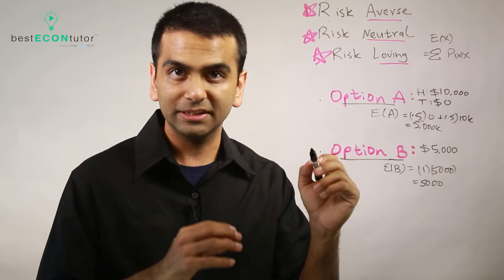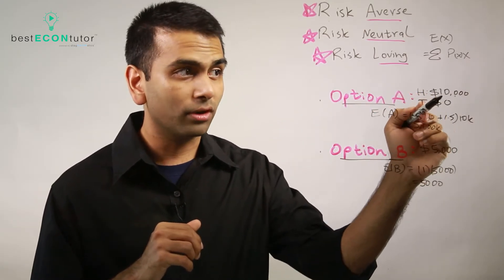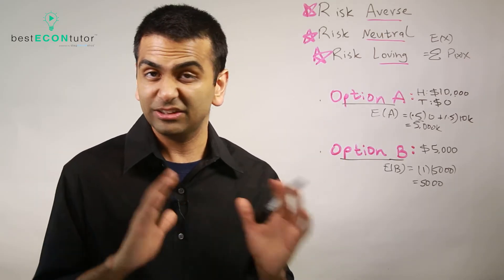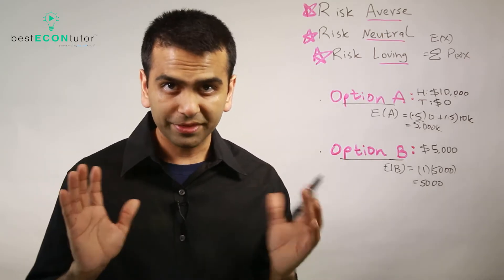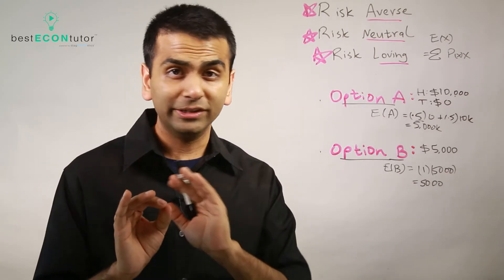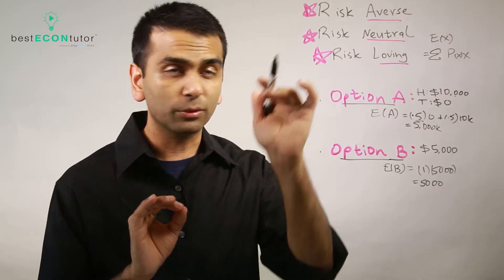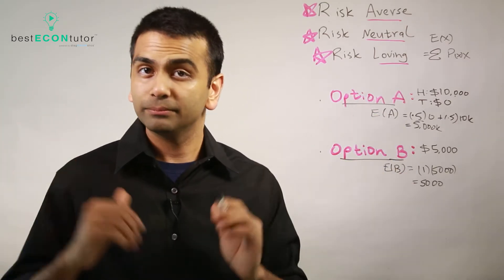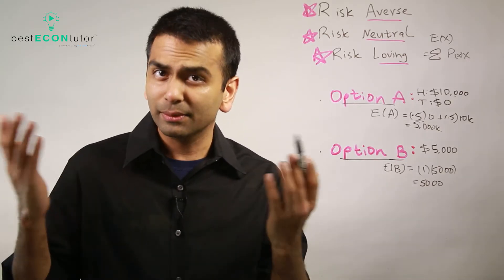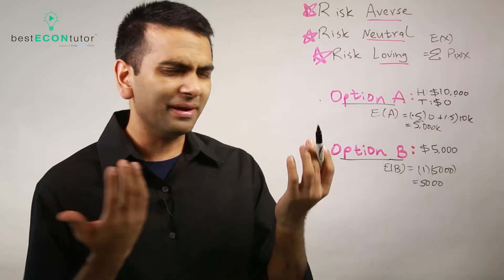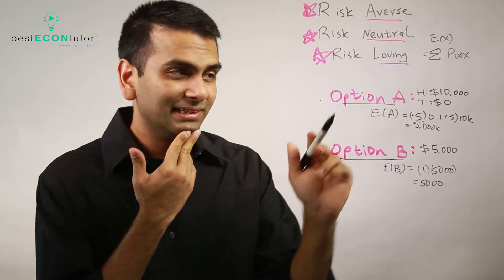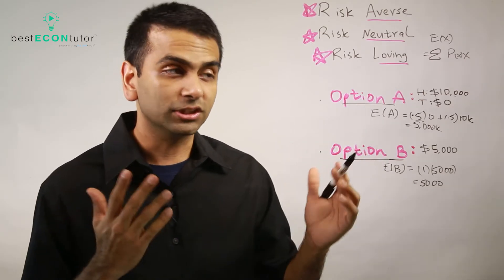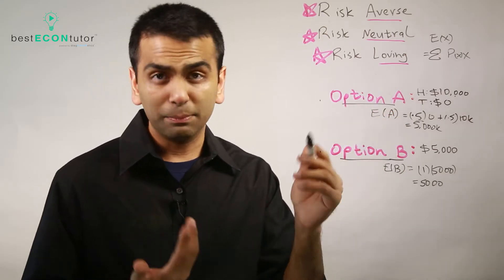The expected value of option B is simply 100% times $5,000, which is also $5,000. So these two options have the exact same expected value. Whenever that's the case, you can definitely tell what type of person someone is based on which option they choose. If two options have different expected values, choosing the higher one doesn't reveal risk preference — but equal expected values make risk type clear.